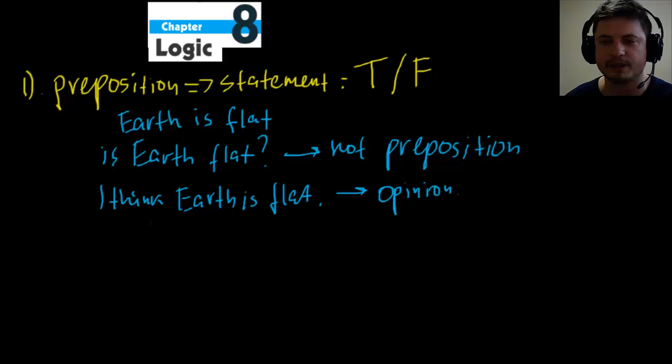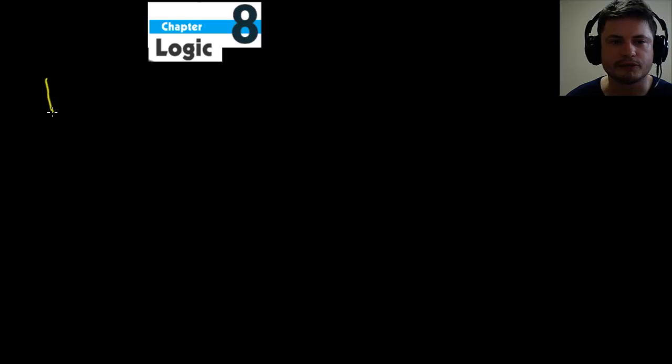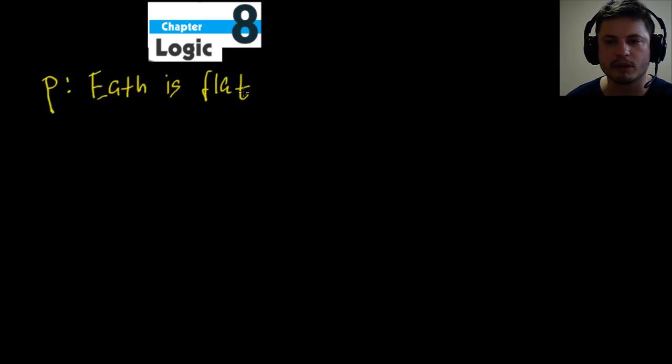So it has to be something that only has two possible answers, either true or false. And this right here is what we call the truth value. This is called the truth value. Basically, whether the proposition is true or false, the truth value. So this is how we would write this in logical terms. So basically, P is our proposition and P here is that Earth is flat. And it can be either true or false.